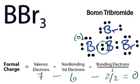So the formal charge for this bromine is 0. And since all these bromines are the same, the formal charge will be 0 for all of them.